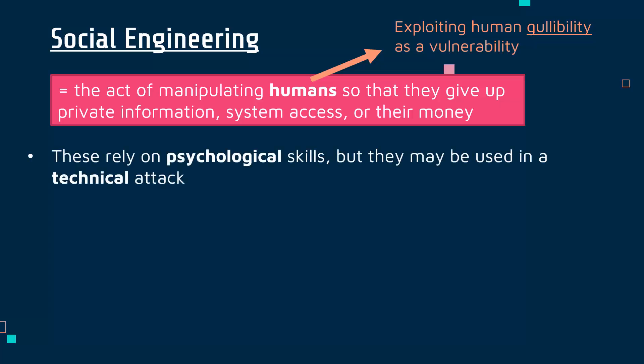Social engineering mostly relies on psychological skills, but it can certainly be used alongside a more technical attack. For instance, an attacker might use social engineering to get a victim to open an email containing a link to download malware. The malware itself is a technical attack, but the method used to deliver it to the victim is a social engineering technique.